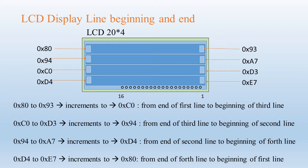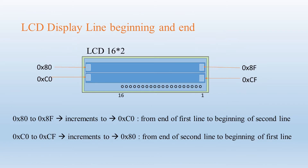The first position in the 1st line starts from 0x80, the first position in the 2nd line starts from 0x94, the first position in the 3rd line starts from 0xC0, and the first position in the 4th line starts from 0xD4. For a 16x2 LCD, the first position in the 1st line starts from 0x80 and ends at 0x8F. The first position in the 2nd line starts from 0xC0 and ends at 0xCF. The cursor increments from the end of the first line to the beginning of the second line and from the end of the second line back to the beginning of the first line.